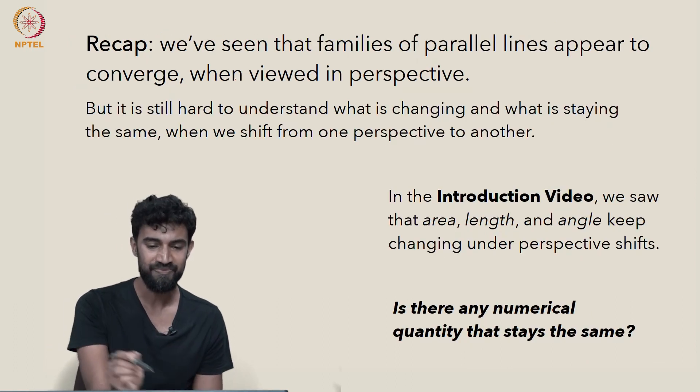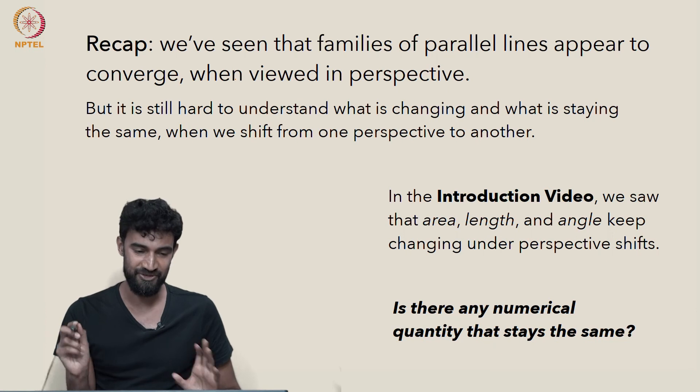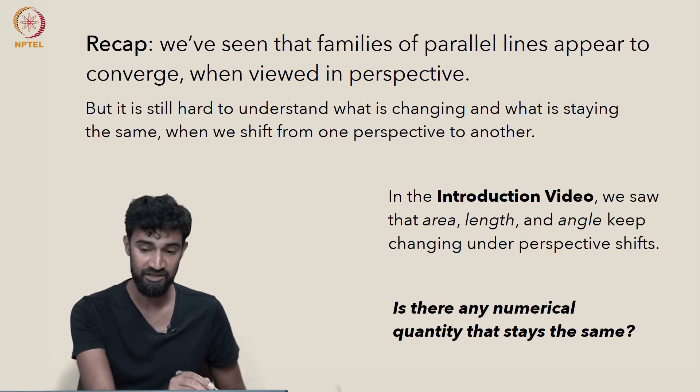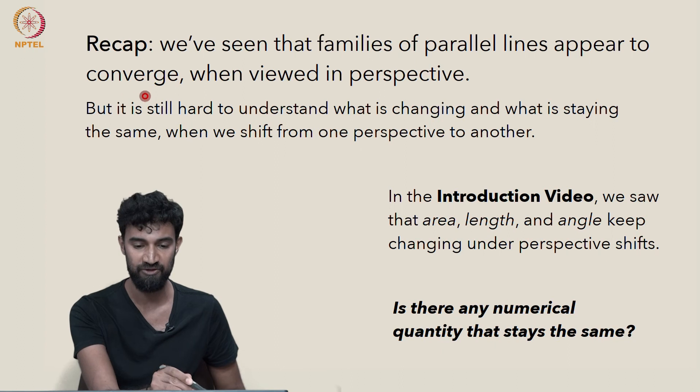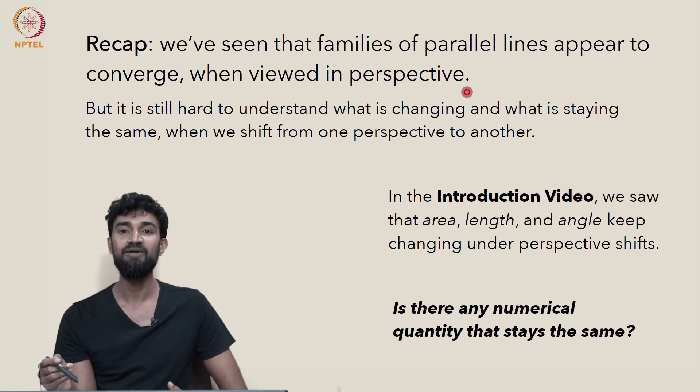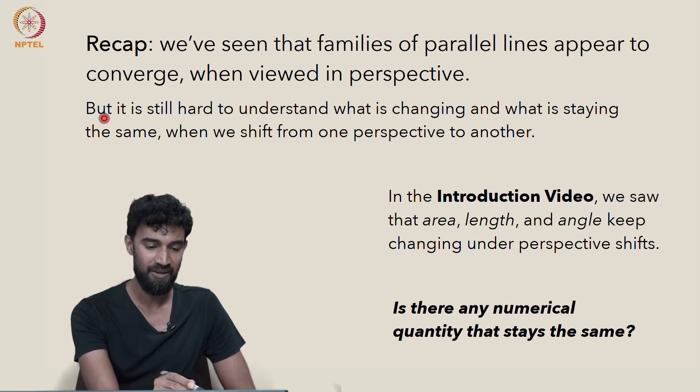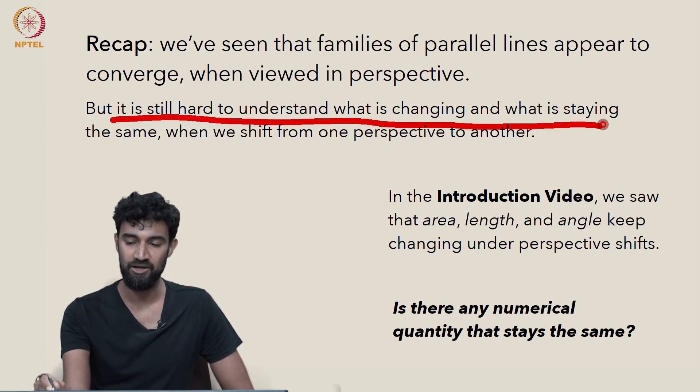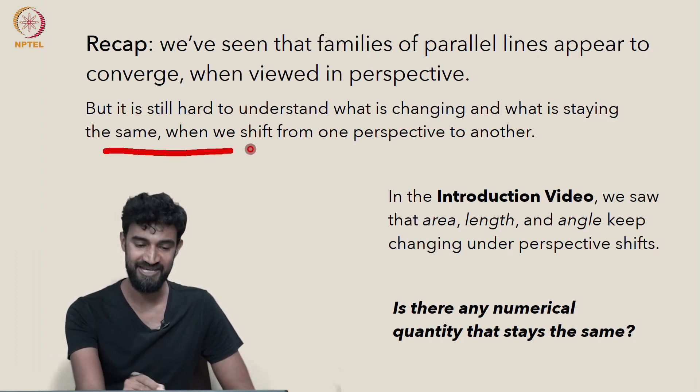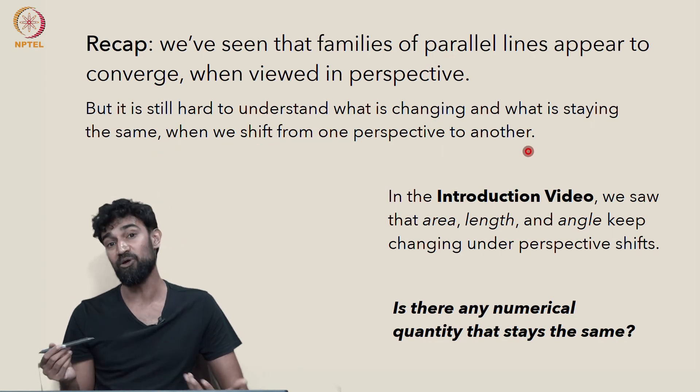And as a recap, we've seen in this first chapter that families of vanishing parallel lines appear to converge when viewed in perspective. And we've understood why that's the case and how we can use it. But it's still hard to understand what's changing and what's staying the same when we shift from one perspective to another.